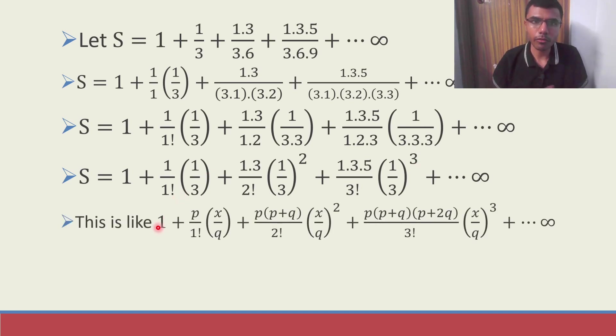This is like 1 plus p by q, p by 1 factorial into x by q plus p into p plus q by 2 factorial into x by q as well. So if you see here, likewise, 1 factorial, 2 factorial, 3 factorial. Power is 1, power 2, power 3. So it goes on and here there's one term, two terms and product of two terms and product of three terms.